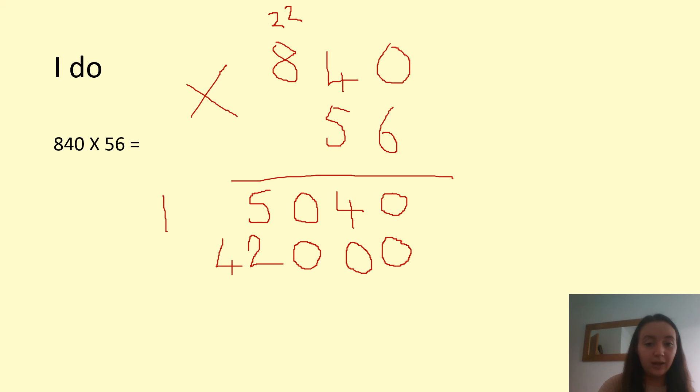OK, and now that we've got here, we've got the nice and easy bit where we add them all together. So zero add zero, four add zero, zero add zero again, five plus two, and four plus nothing. So our answer, pop a little comma in there, is 47,040.